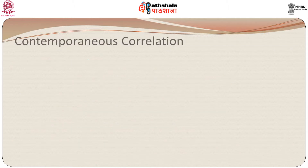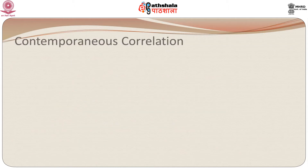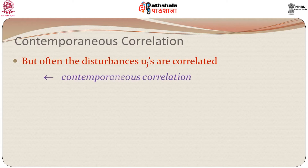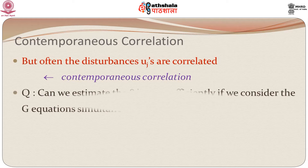But in the case of economic problems, we very often have some relationship between the disturbances. So we say that the disturbances u_j's are correlated — we call this contemporaneous correlation. And the question arises: can we estimate the beta_j's more efficiently if we consider the g equations simultaneously rather than looking at them separately?